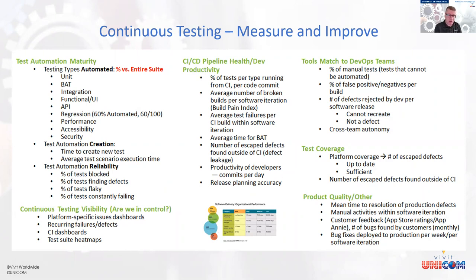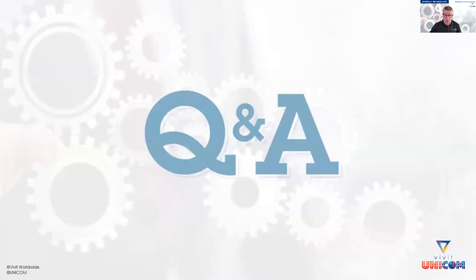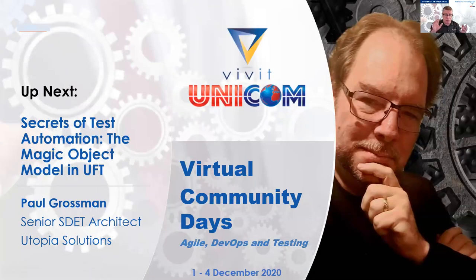You need key metrics and KPIs: test automation reliability, how much time it takes to run a suite, percentage of broken builds, and more. You need these measurements to be in the elite stage of DevOps and continuously evolve your business. With that, I'd like to leave some time for Q&A. Thank you for joining my keynote — I hope I gave you some value. Coming up next is my friend Paul Grossman talking about secrets of test automation: the magic object model in UFT.